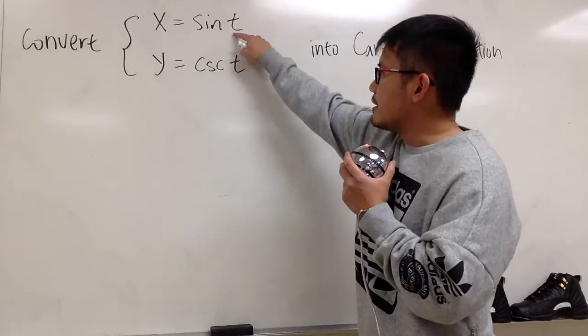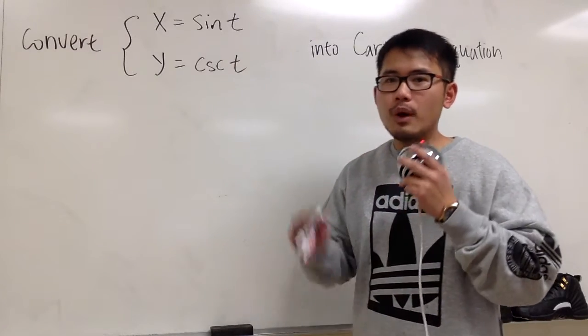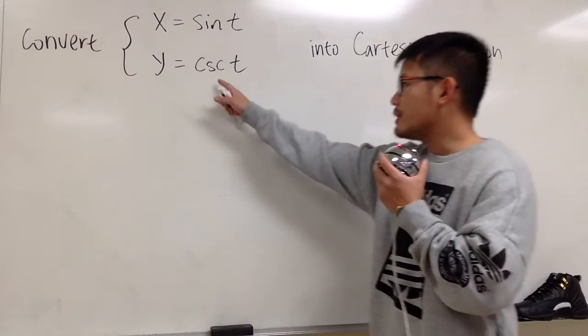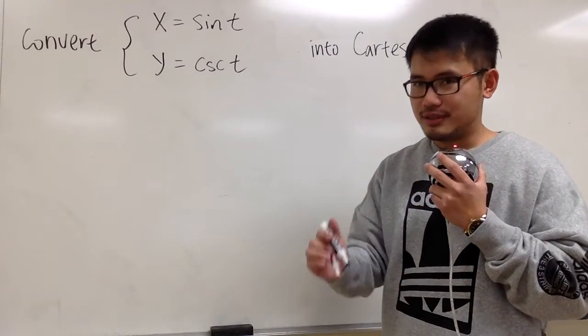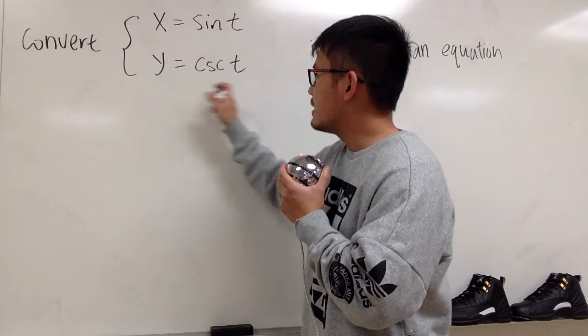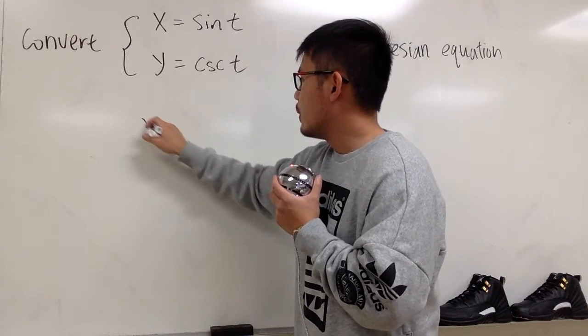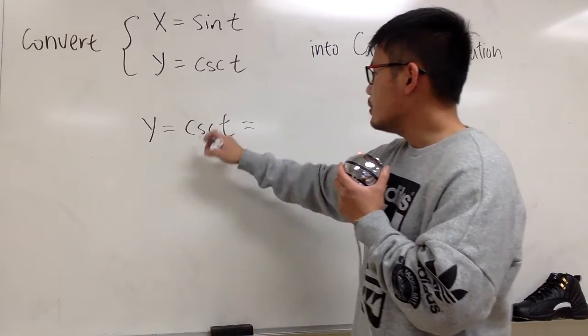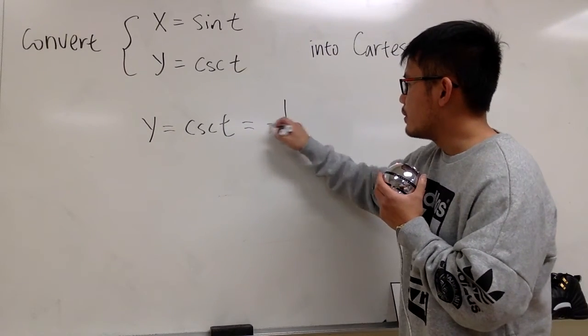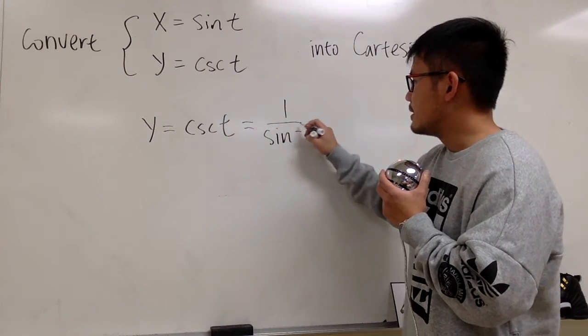If you take a look of sine t and cosecant t, what is the connection? We know that cosecant t is just 1 over sine t. So, let me just look at the y equation here, y, which is we know, cosecant t, and we also know this is equal to 1 over sine t.